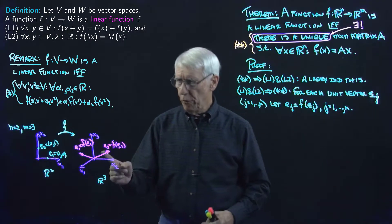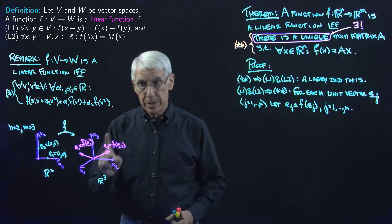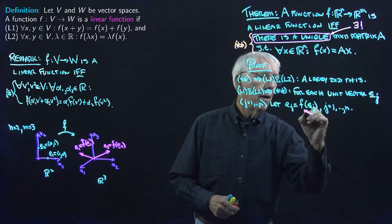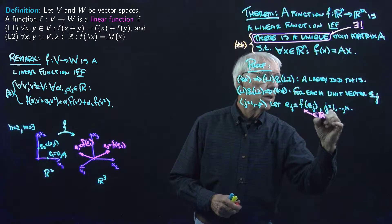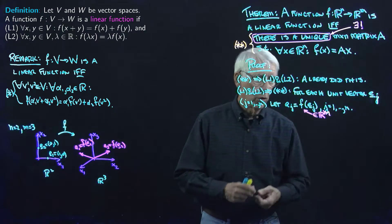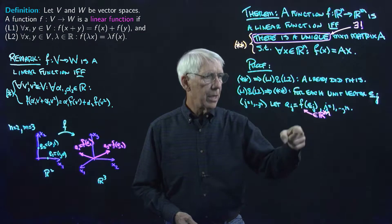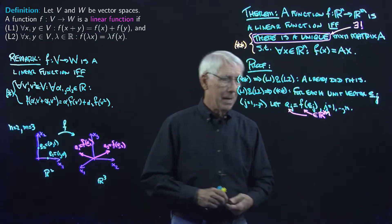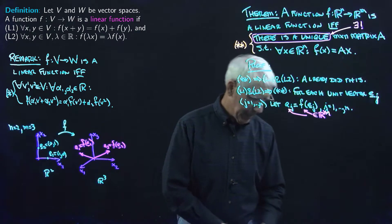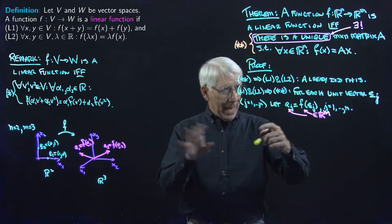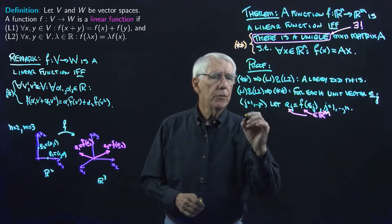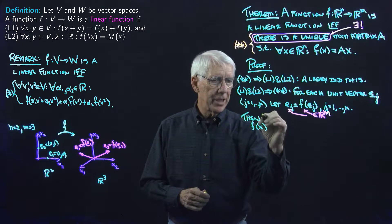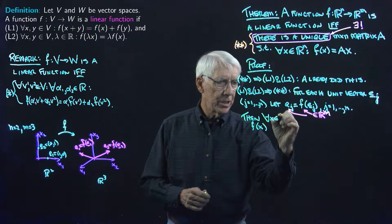That's the technique I was alluding to—it turns out to be useful in lots of situations with linear functions especially. We look at just what happens under F to the two unit vectors, and they get mapped to some arbitrary vectors A_1 and A_2, and more generally A_1 to A_N over in the target space R^M. We should emphasize that these A's are in the target space R^M. So let's go back to where we are now in the proof. We have F of x for any x in the domain.